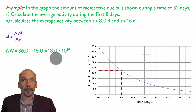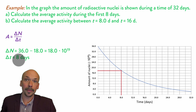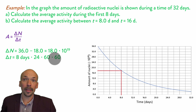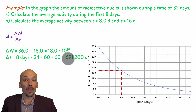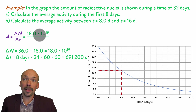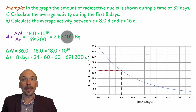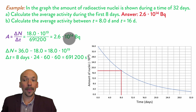Now we need to determine the time. The first 8 days is, of course, 8 days, but we need the time in seconds. So we multiply by 24 to get hours, multiply by 60 to get minutes, and multiply by 60 again to get seconds — giving us 691,200 seconds. Using both values in the equation, we get 18 times 10 to the power of 19 divided by 691,200, which gives us 2.6 times 10 to the power of 14 becquerel. So the activity for the first 8 days is 2.6 times 10 to the power of 14 becquerel.